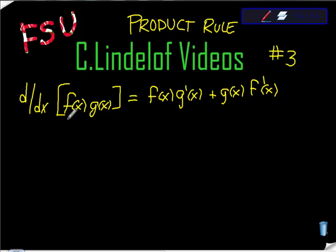So d dx, the derivative, the slope of one function times another function, can be written as a rule that says f of x, the first function, times the derivative of the second function, plus the second function times the derivative of the first function.